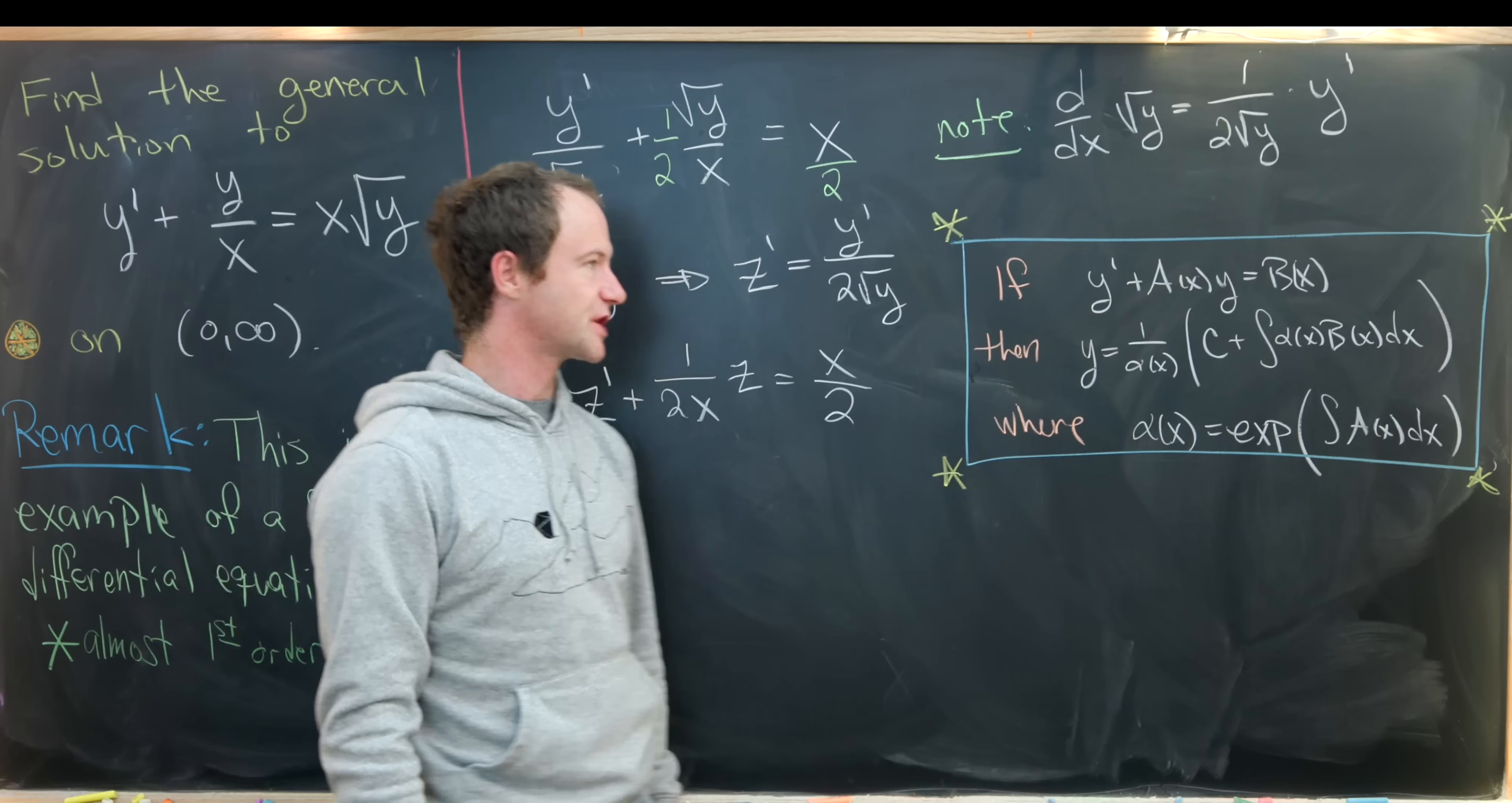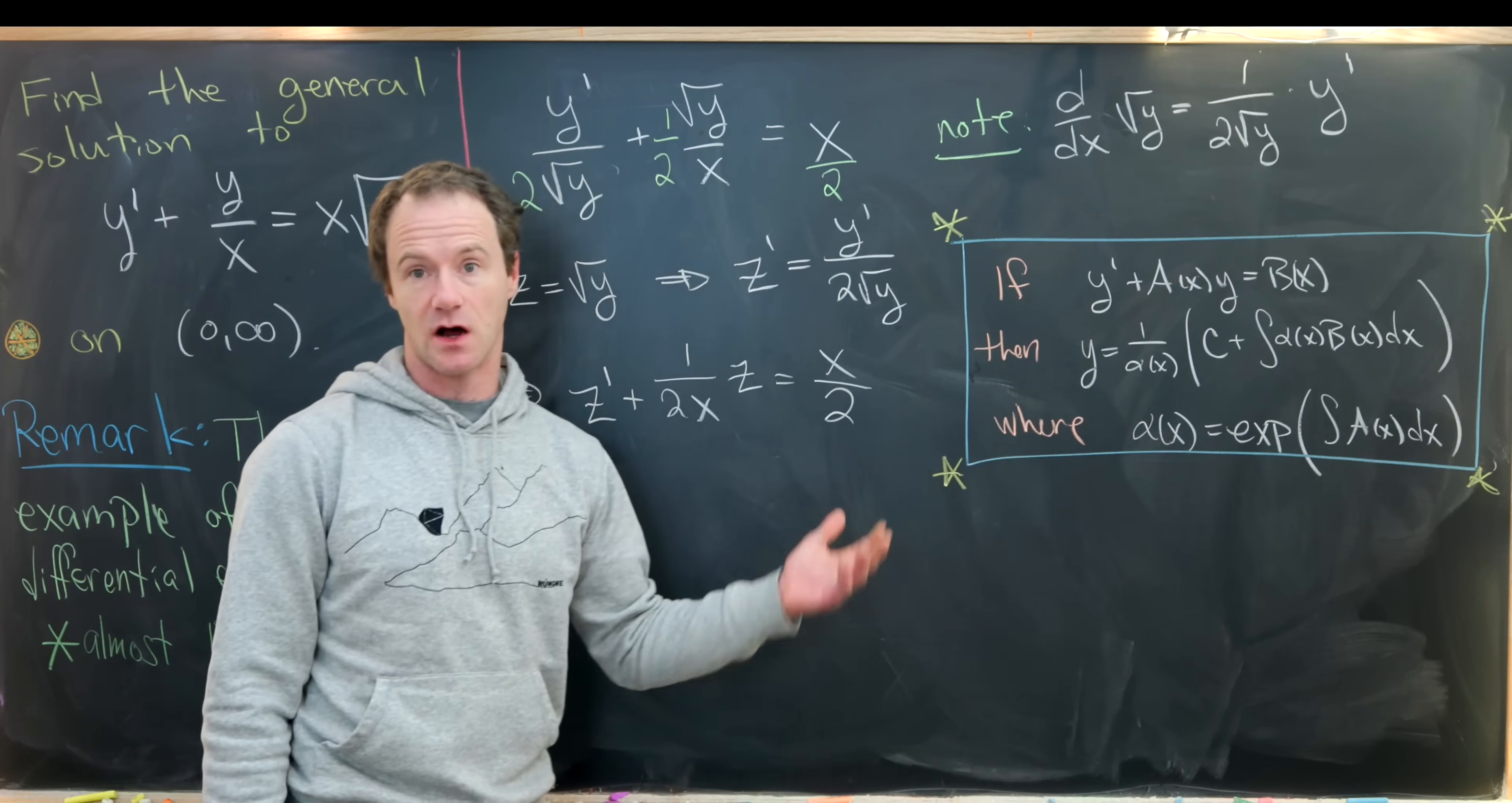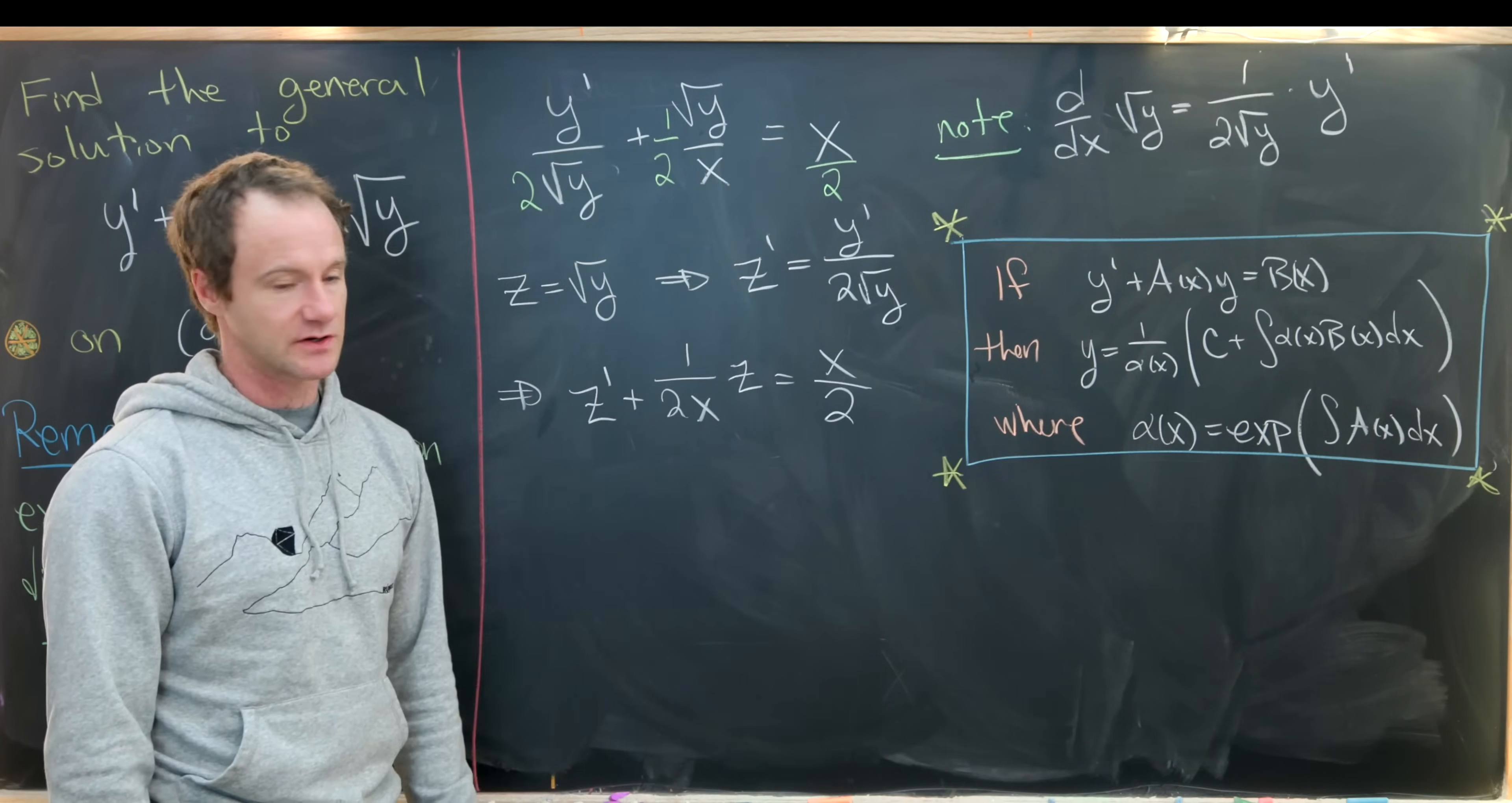If we have the differential equation y prime plus a of x times y equals b of x, where a and b are nicely defined functions, then y equals one over alpha x times the quantity c plus the antiderivative of alpha of x times b of x dx, where alpha is the exponential of the antiderivative of a of x. This is the integrating factor.